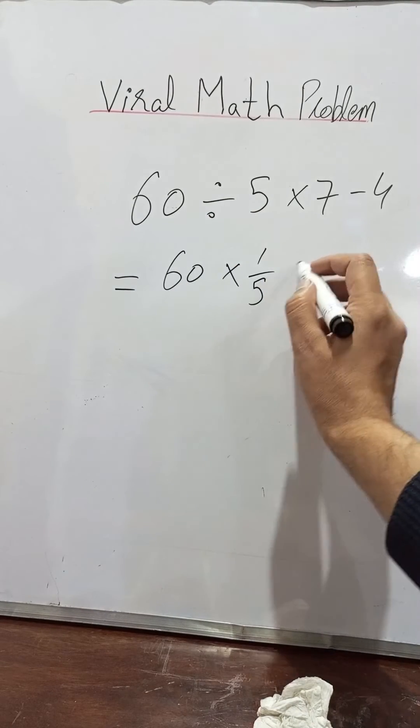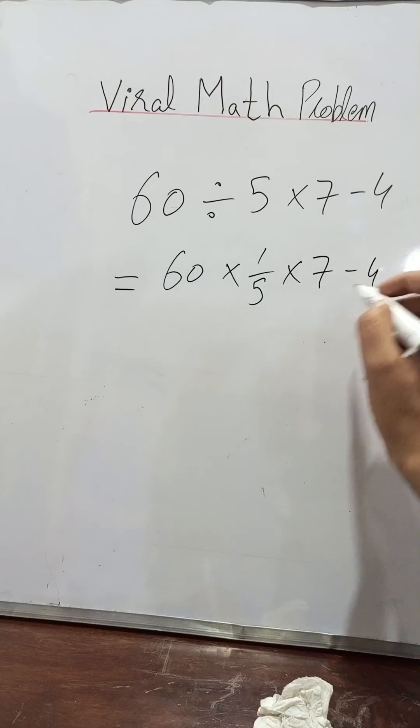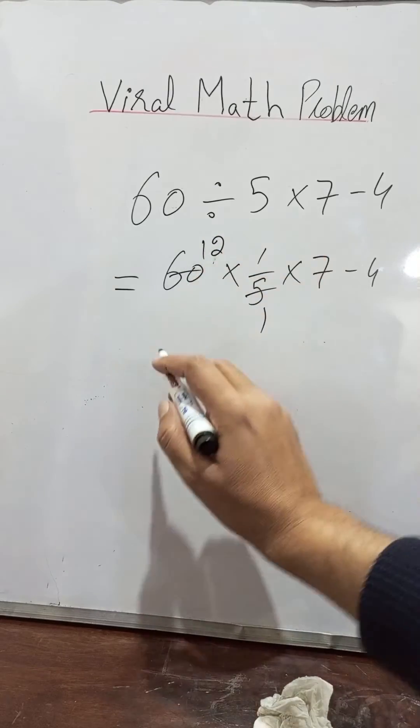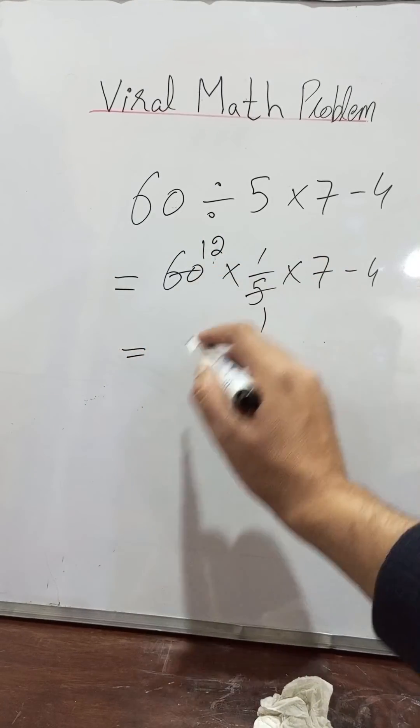Then multiplication. 60 divided by 5 times 7 minus 4. 5 is cancelled out with 60, we get 12. Just simplify the terms.